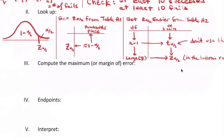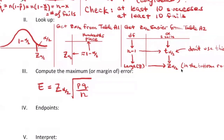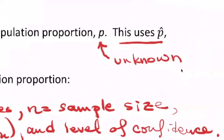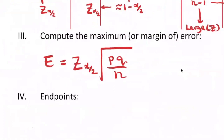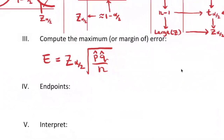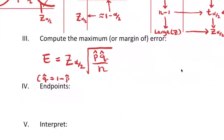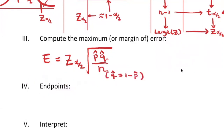The margin of error is E equals z-alpha-over-2 times the square root of pq over n. The formula for the standard error uses PQ over N, but you don't know those values since the population proportion P is unknown. Your best estimate is p-hat, so q-hat is 1 minus p-hat and you substitute those in. It's a pretty simple computation, but you've got to use your square root function properly.